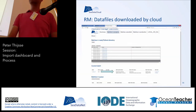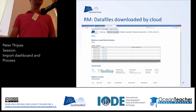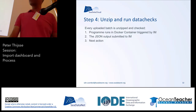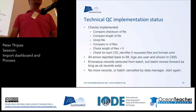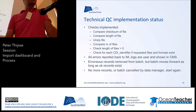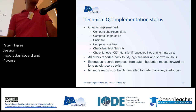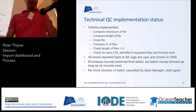You can follow that progress — normally it will go quite fast so you won't be watching this, but you can see in the replication manager what status it is. Once the data files are downloaded, the files are on the cloud zipped, so they first need to be unzipped, and then a series of checks is run. What we do first is a kind of technical check: we check the checksum of the files and compare it to how it was. We compare the length of the files, check if there are no zero-byte files, and check the CDI identifier and whether requested files in the formats exist.